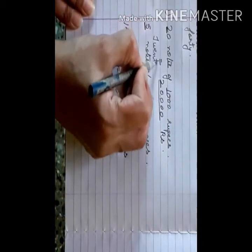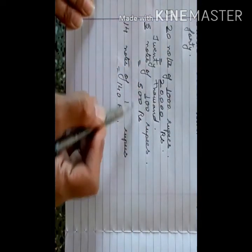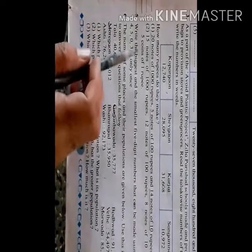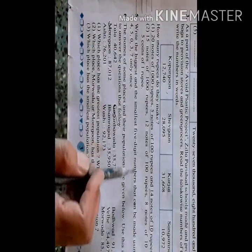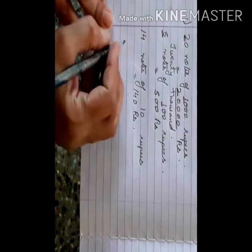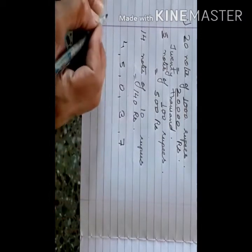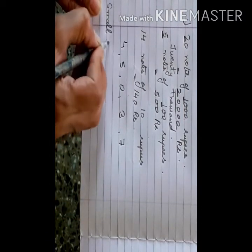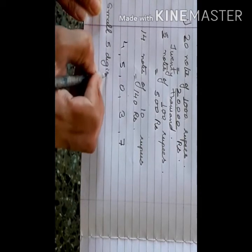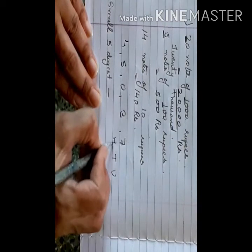We have to write these amounts in words: twenty thousand rupees, five hundred rupees, one hundred forty rupees. The next question is to write the biggest and the smallest five-digit number using the digits four, five, zero, three, and seven.